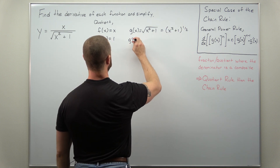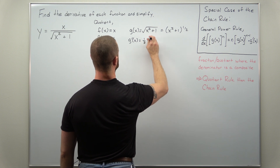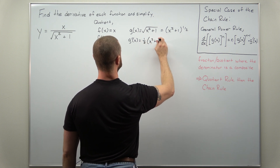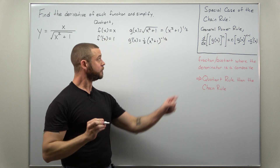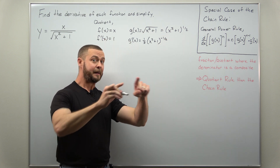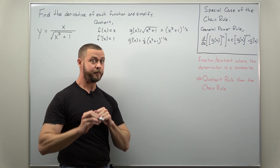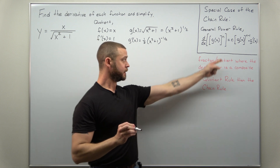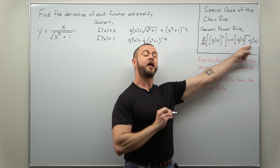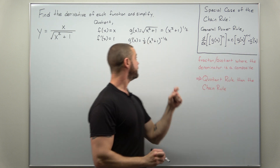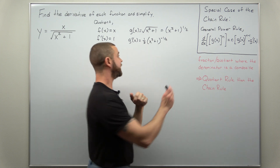To calculate g prime, we'll start by bringing the power one-half down, keep the inside the same, and subtract one from that power. We have one-half minus one, which simplifies to negative one-half. Because we're applying the chain rule using the general power rule, we multiply by the derivative of the inside. The derivative of x squared plus one comes out to two x.